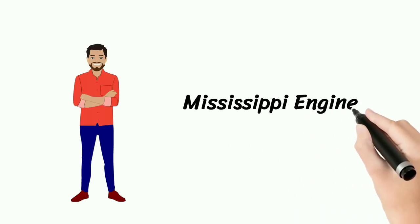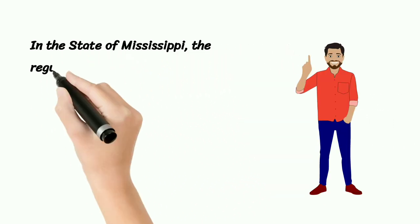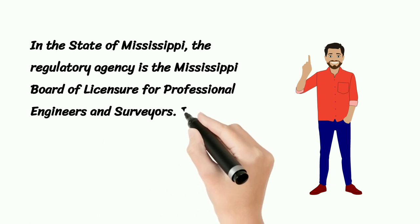Mississippi Engineer License. In the state of Mississippi, the regulatory agency is the Mississippi Board of Licensure for Professional Engineers and Surveyors.